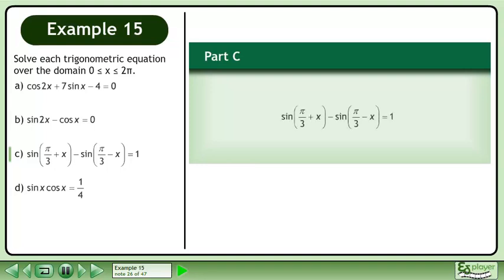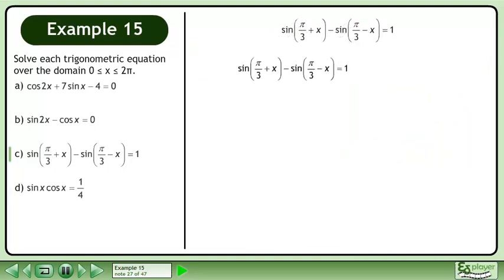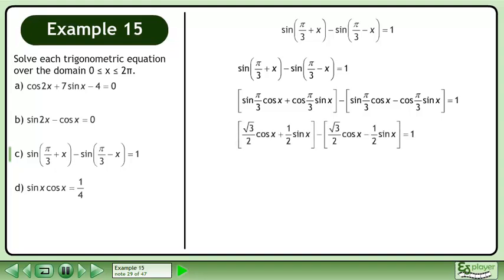In Part C, solve sin(x plus a) minus sin(a) equals 1. Rewrite the original equation. Expand using the sum and difference identities for sine. Find the exact value of each trigonometric ratio. Distribute the negative through the brackets.